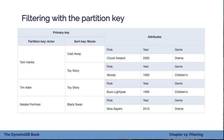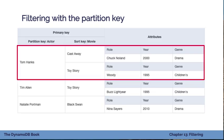Going back to that movie roles table, we have all these different items, and we have to include that partition key with our query or our GetItem call. Any of that is going to narrow it down right to the partition we want and filter out the other data that doesn't match.